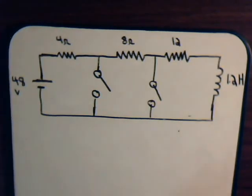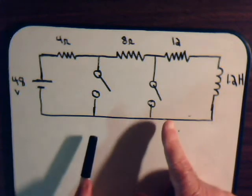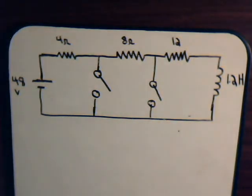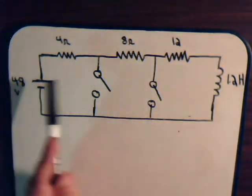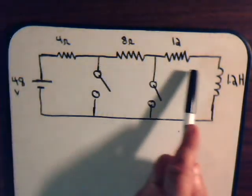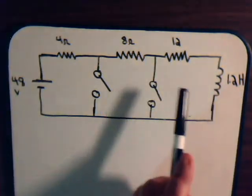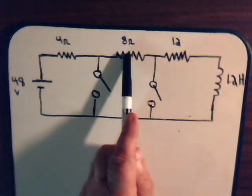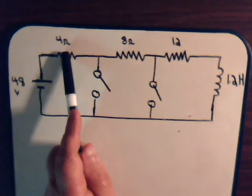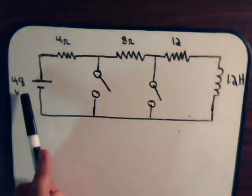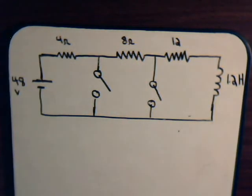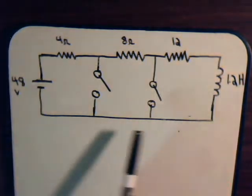Both of these switches are open, so while the switches are open, there will be a current going through the circuit. This is 12 plus 8 is 20, plus 4 is 24. So 48 divided by 24, there's 2 amps of current flowing through here.